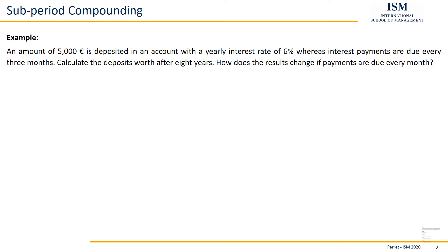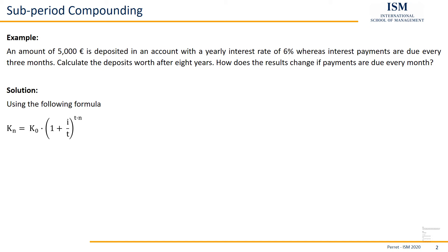Due to the fact that not only the interest rate decreases, but the number of interest periods increases — if we work here for eight years on a quarterly basis, we actually have to multiply the eight years by the four quarters, because we have 40 interest payments in total. So we make only two changes to our formula: we divide the interest rate by the number of subperiods, and we multiply the number of periods by the number of subperiods. If we work on a yearly basis, as we did up to this point, we get the original formula again.